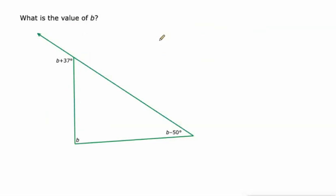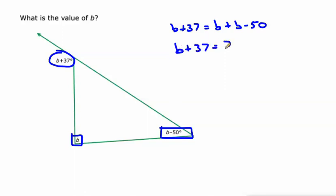And then we start getting into these, but the concept remains that this exterior angle is equal to the sum of the other two. So B plus 37 is equal to B plus B minus 50. Let's combine like terms on the right. B plus B is 2B. Then let's subtract B from both sides. And lastly we'll add 50 to both sides and we get 87 degrees as the value of B.